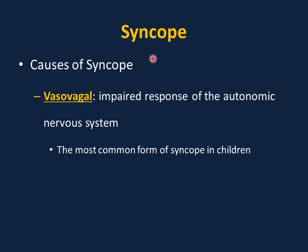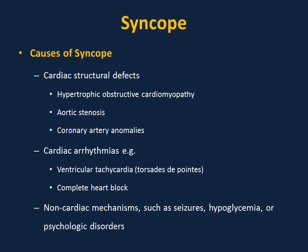These prodrome symptoms occur with standing or sitting — not while laying down, not during running or exercise. Vasovagal syncope is the most common cause of syncope in children. It is an impaired response of the autonomic nervous system causing transient self-limited loss of consciousness with inability to maintain postural tone, followed by spontaneous recovery. However, we must be familiar with the rare and dangerous causes of syncope.